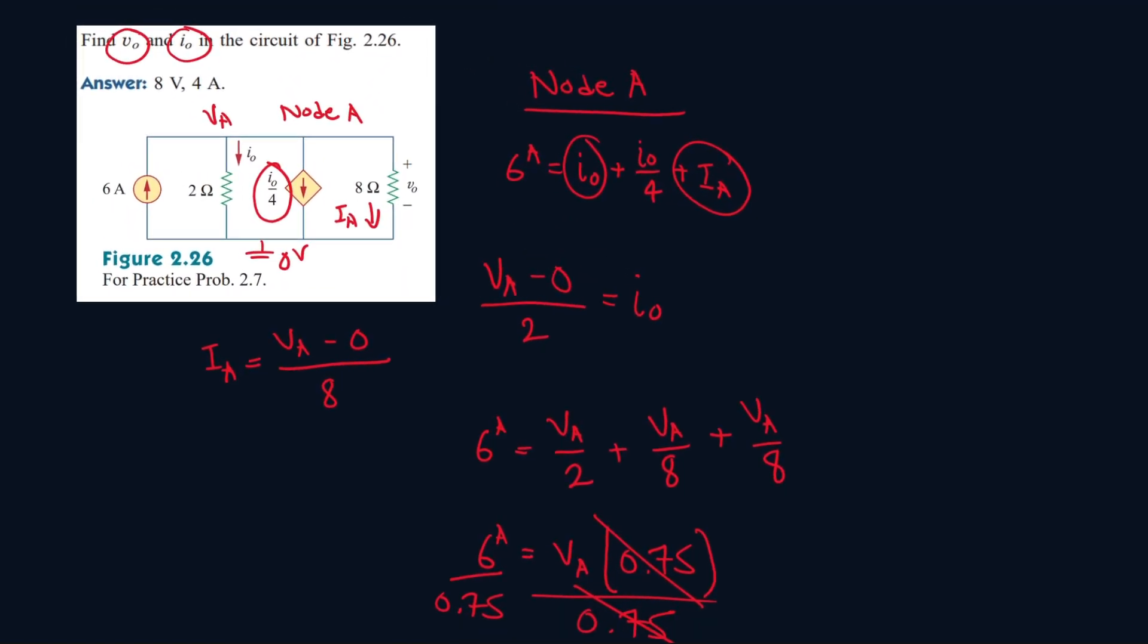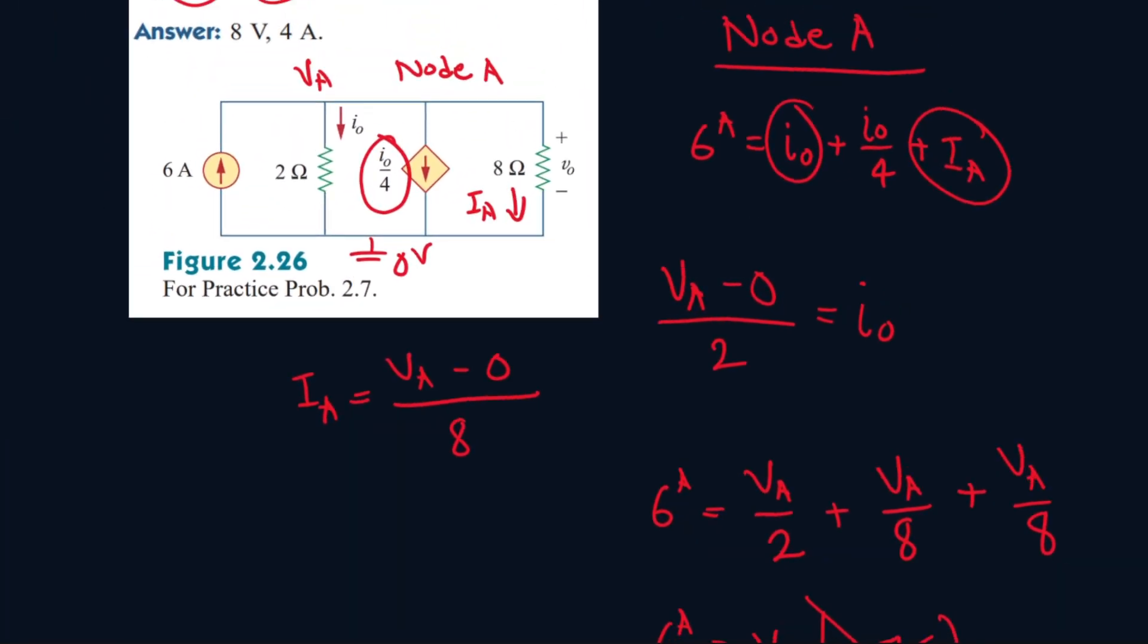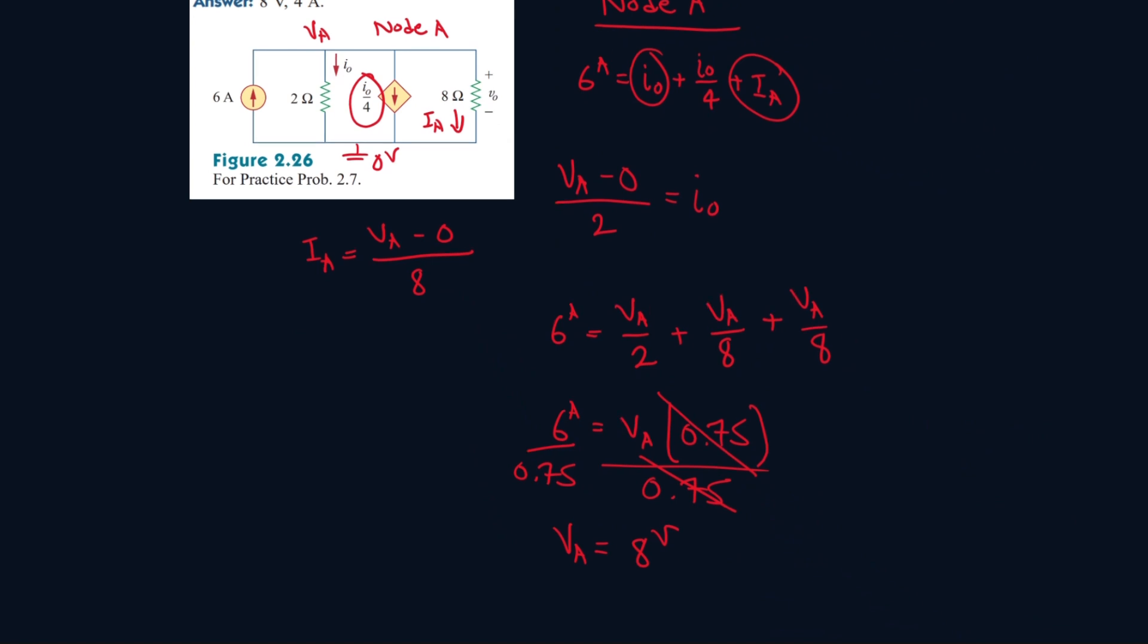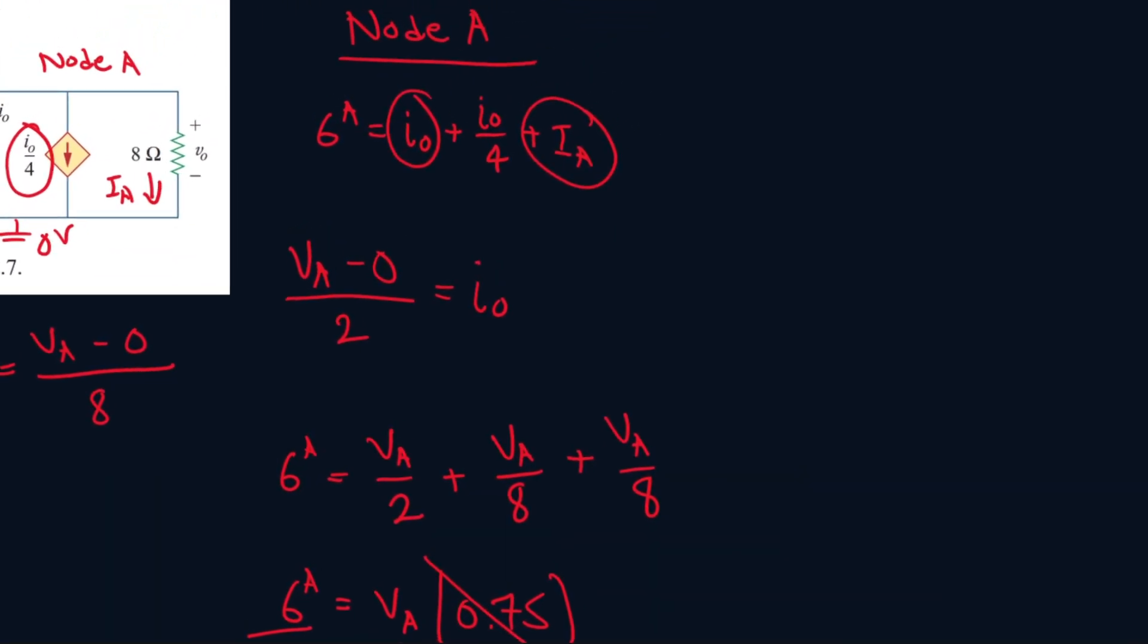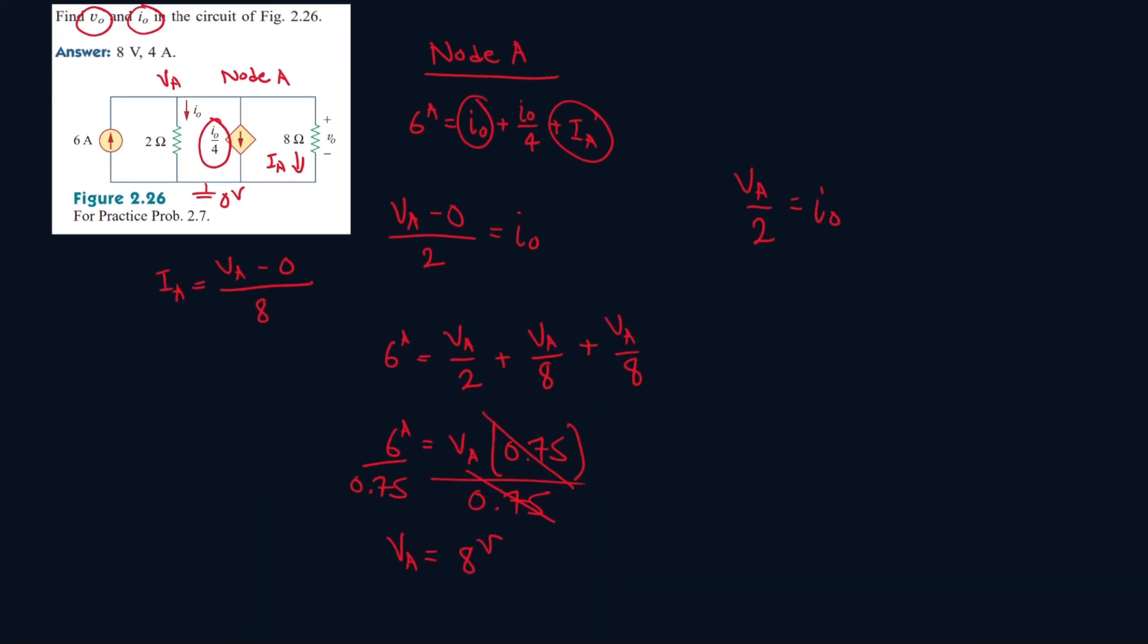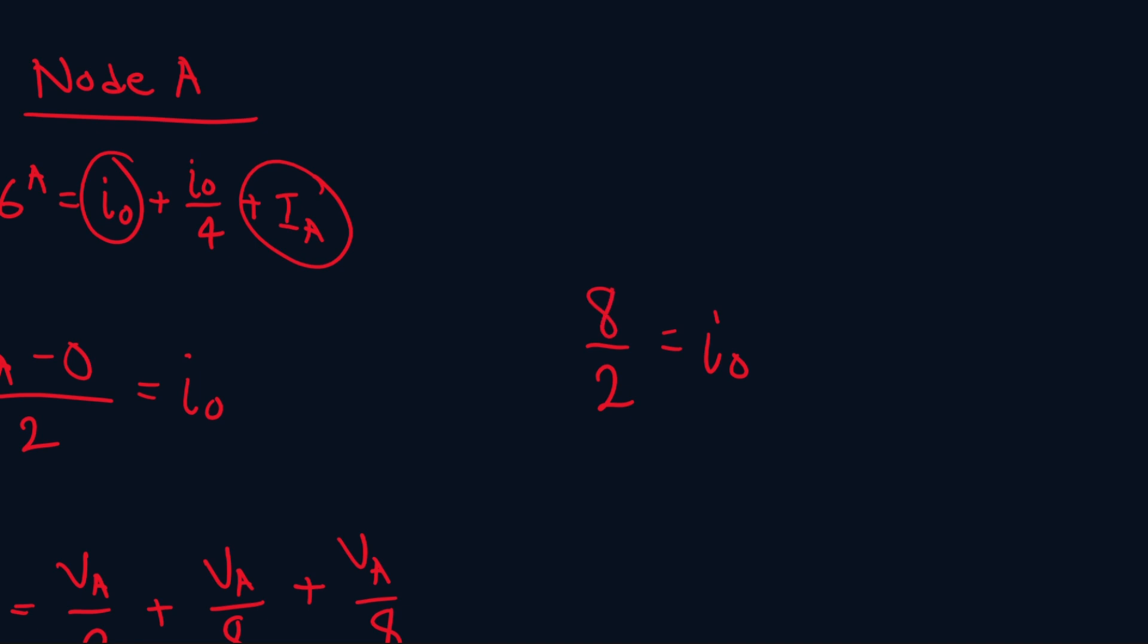Now we can use VA to find I0. So we can use this equation. VA over 2 equals I0. VA is 8. 8 over 2 is 4. So I0 is 4.